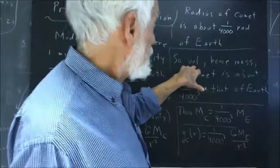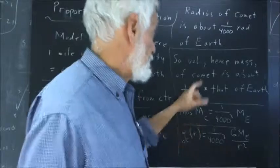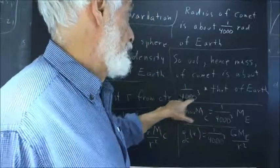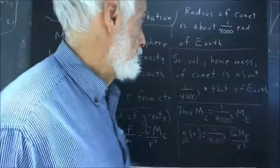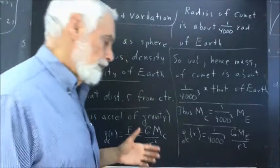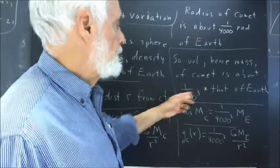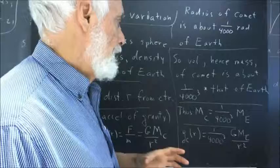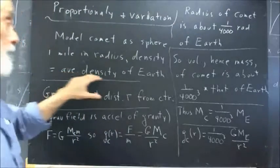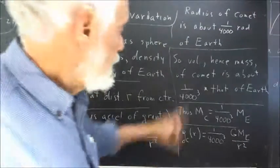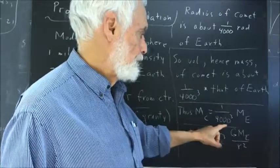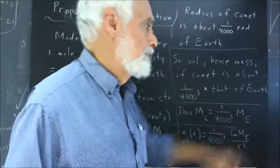So, it turns out that the volume then of the planet, of the comet, is about one over 4,000 cubed times that of the Earth. Because the proportionality of volumes is going to be the cube of the proportionality of diameters given the same density. It follows that the mass of the comet is one over 4,000 cubed times the mass of the Earth.